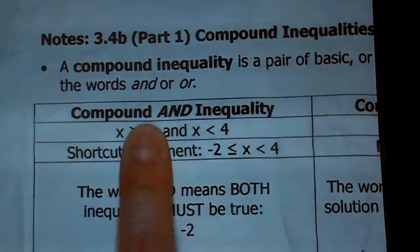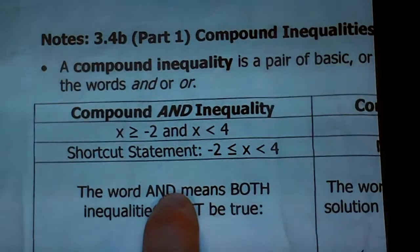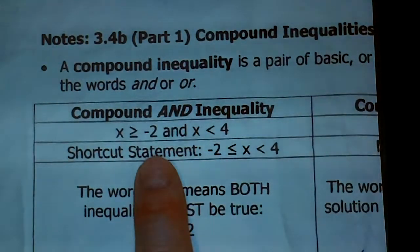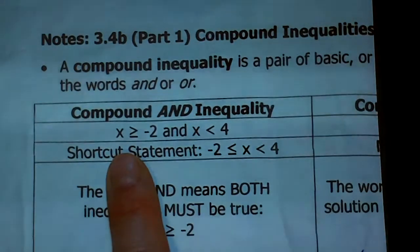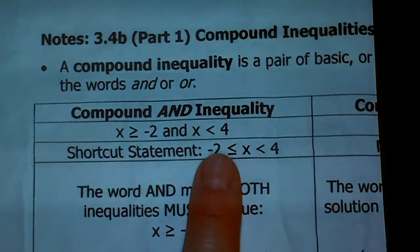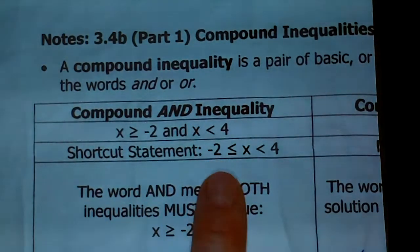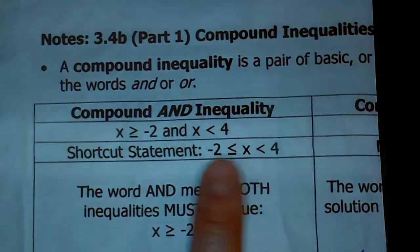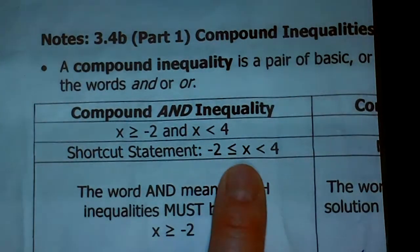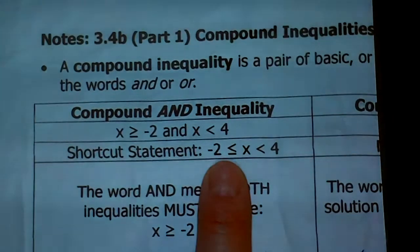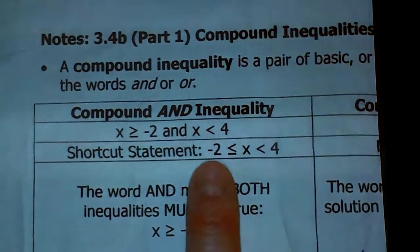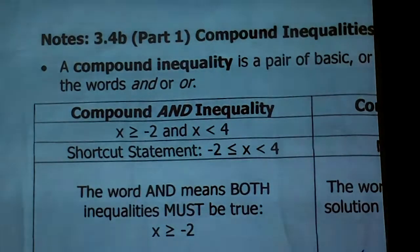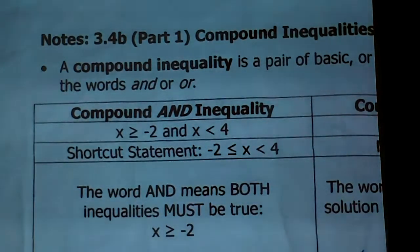We're going to look at the 'and' inequality first. There are two statements with the word 'and' in between. So x has to be greater than or equal to negative 2, and x is less than 4. Another way to say an 'and' inequality is to put the variable smack dab in the middle with those values on either side. This is still saying x is greater than or equal to negative 2 and x is less than 4 — just one statement altogether. You can only do that with the 'and' ones.